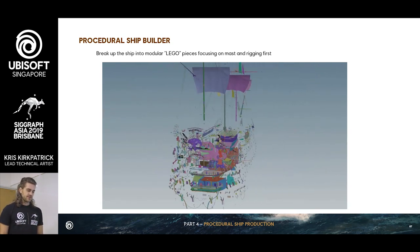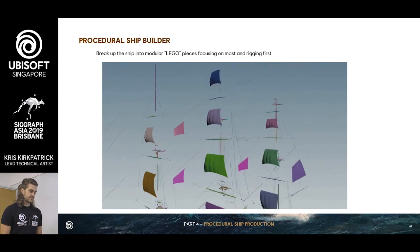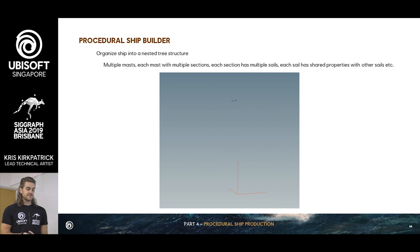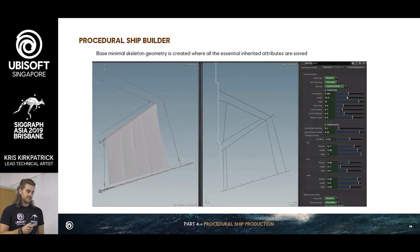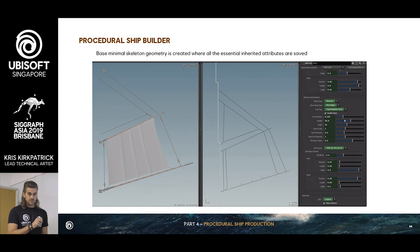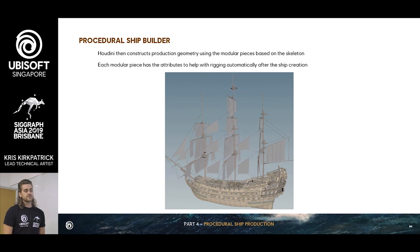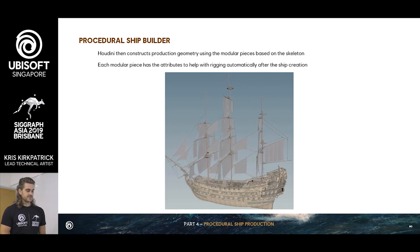So how does it work at a high level? First, we need to break up the ship into modular pieces — we started with the mast and rigging, which are the most expensive, with all the ropes and sails. We break it into modular Lego pieces, then organize it into a nested structure: multiple masts, each mast has multiple sections, a section has multiple sails, and each sail has all the properties of sails. We put that into a structure, generate the base model with skeleton geometry, store all the inherited attributes, and then Houdini constructs the production geometry with those modular pieces.